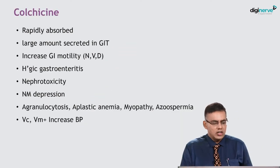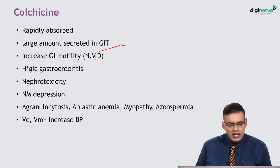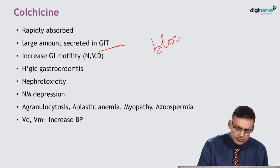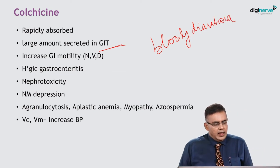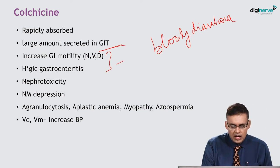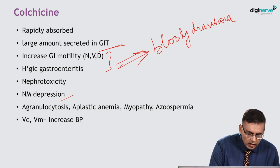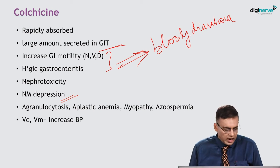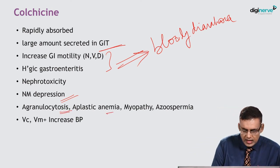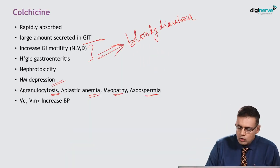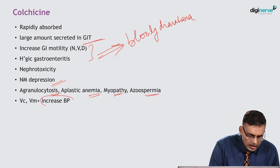Looking at the pharmacokinetics: colchicine is rapidly absorbed, and a large amount is secreted in the GIT — it increases GI motility. Colchicine is notorious for causing bloody diarrhea and can cause hemorrhagic gastroenteritis. It can cause nephrotoxicity, neuromuscular depression (also seen with D-tubocurarine), agranulocytosis, aplastic anemia, myopathy, azoospermia, vasoconstriction, and vasomotor stimulation which can increase blood pressure.